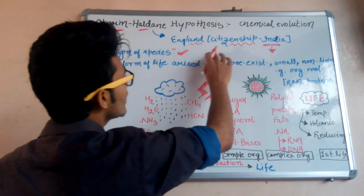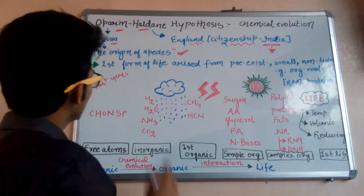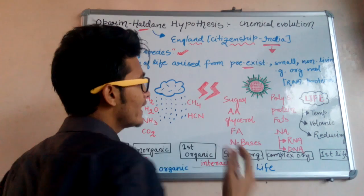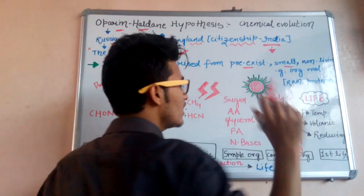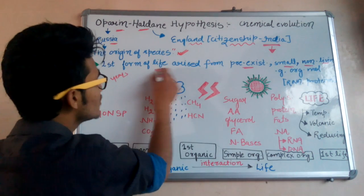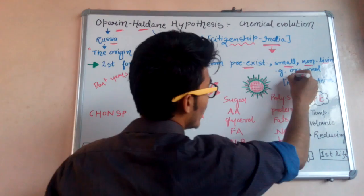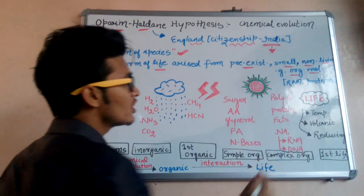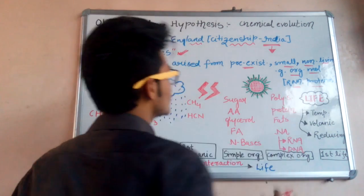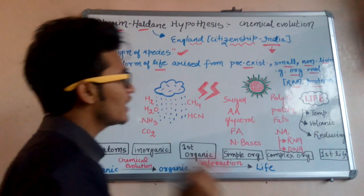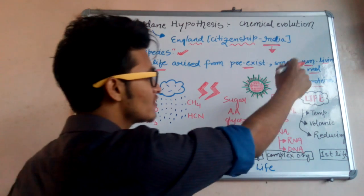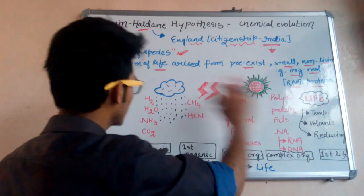What's special about Haldane is that he got citizenship for living in India — Haldane is from England and he got Indian citizenship. The first form of life arose from pre-existing small non-living organic molecules such as RNA, proteins, fats, or some kind of polysaccharides.